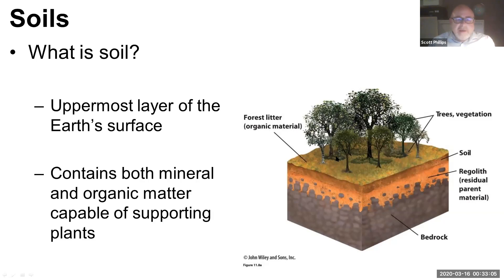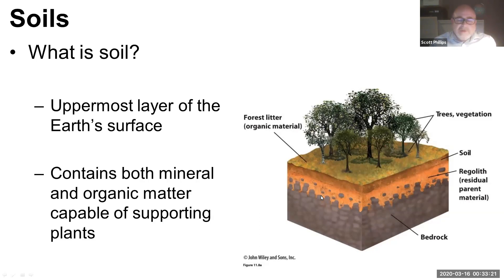When we say organic matter, we mean it comes from the living material above the ground, such as vegetation, trees, leaves, roots, grasses, and so on. And the mineral material is the rock material. So it's a mixture of rock and living things, essentially.